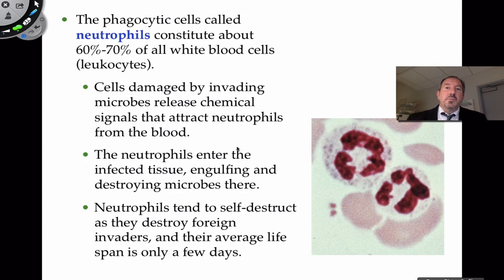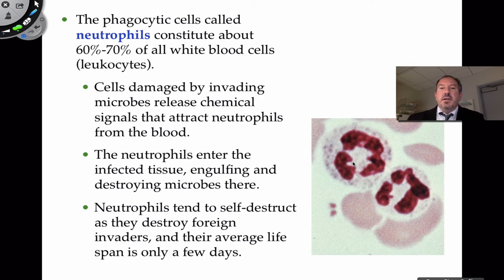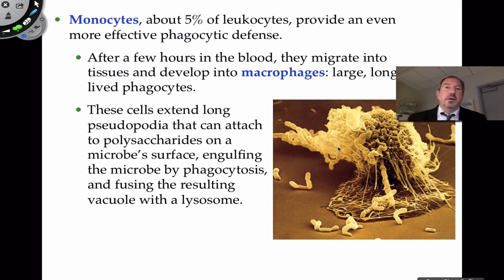The most common white blood cell is a neutrophil — a granulocyte characterized by sausage-shaped or lobed nuclei. These are the main phagocytes: they come to an area and start engulfing microbes and destroying them. The monocyte is also capable of phagocytosis — though less common at about 5% — and can extend pseudopodia out to grab and engulf foreign organisms, then destroy them when they fuse with the lysosome inside.